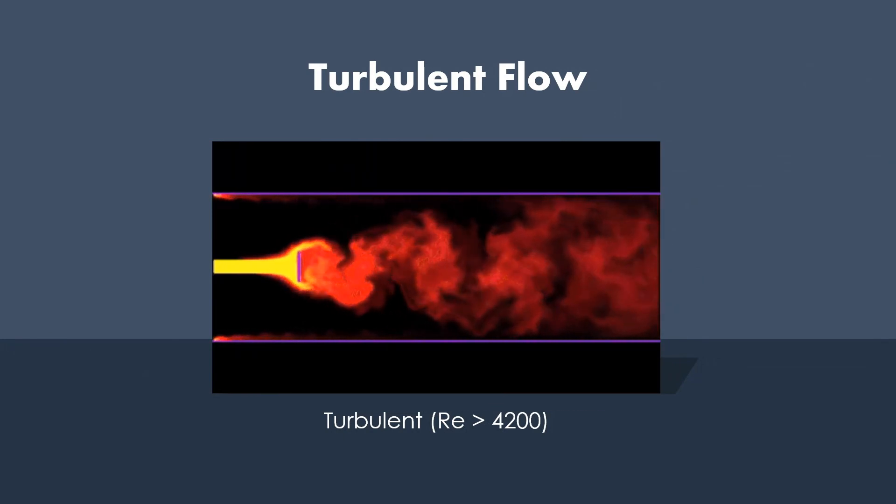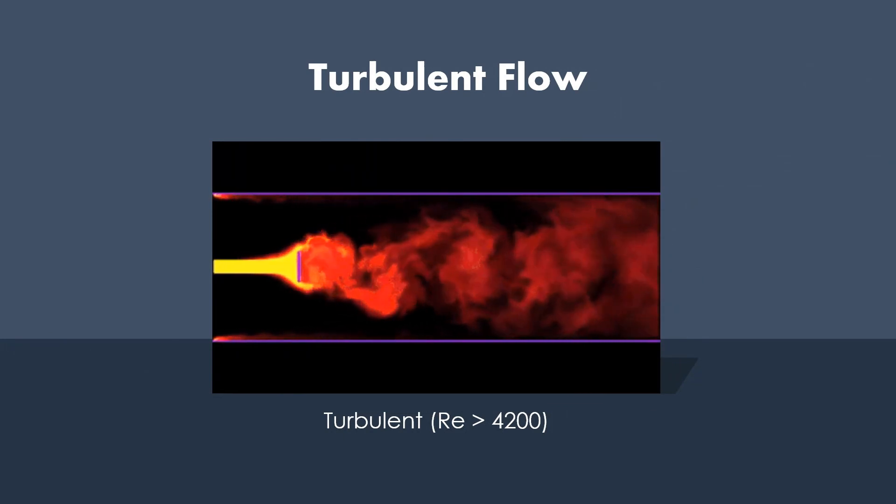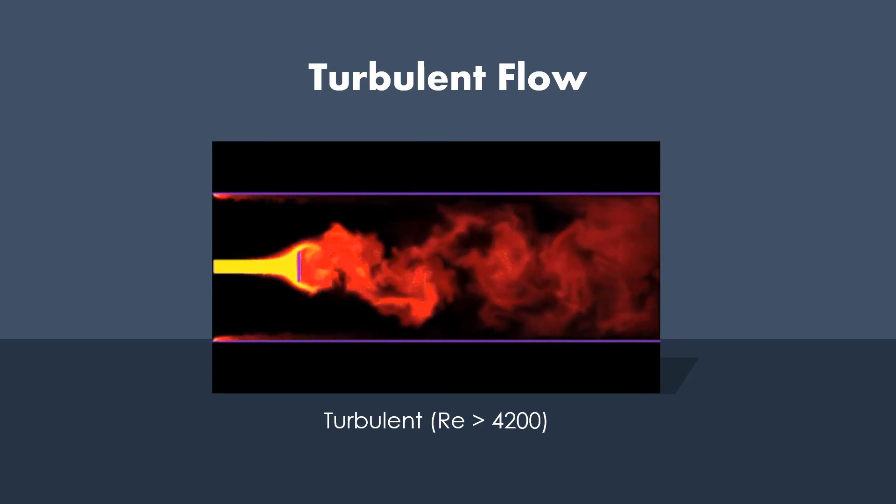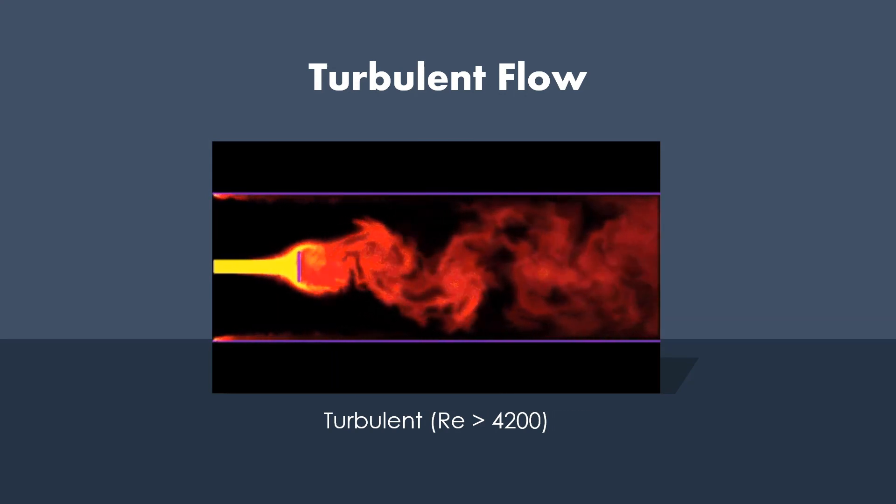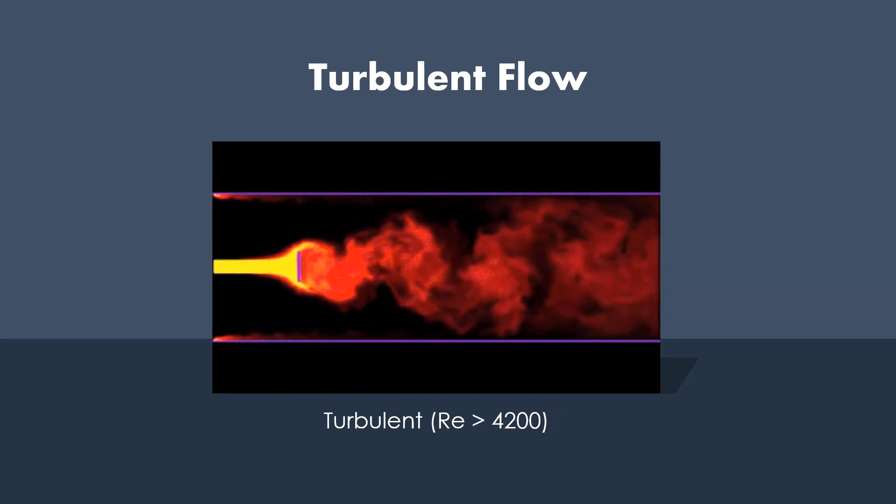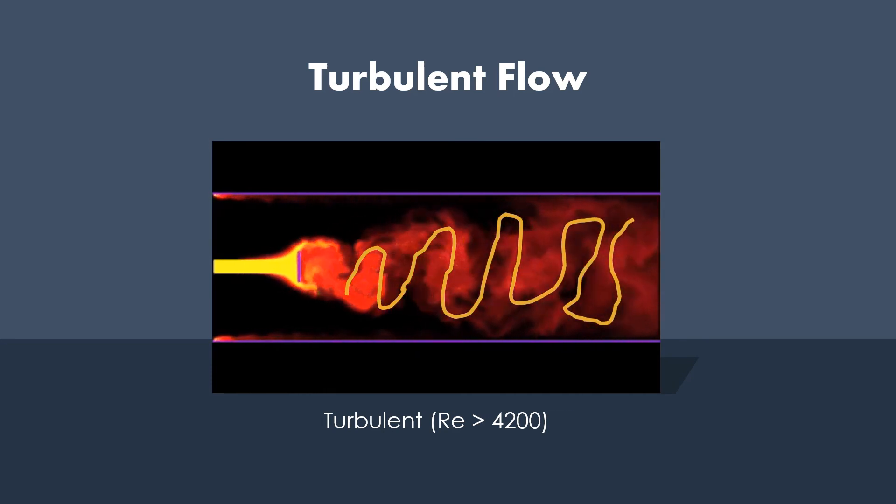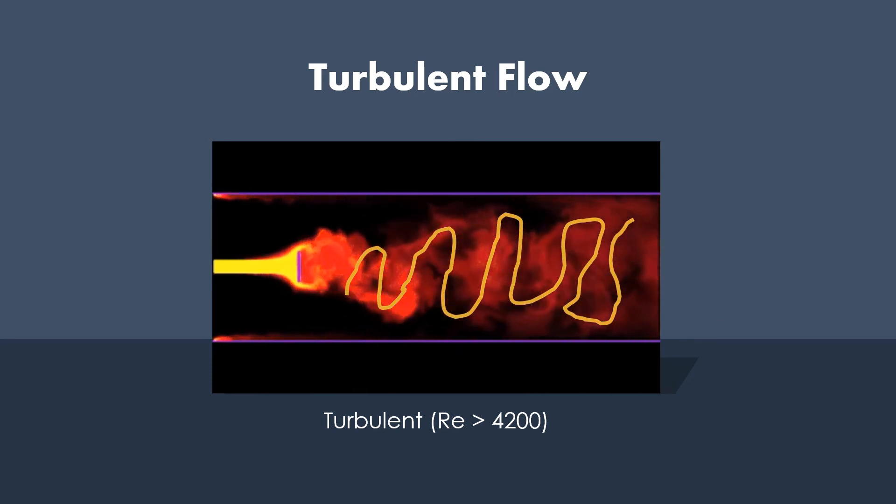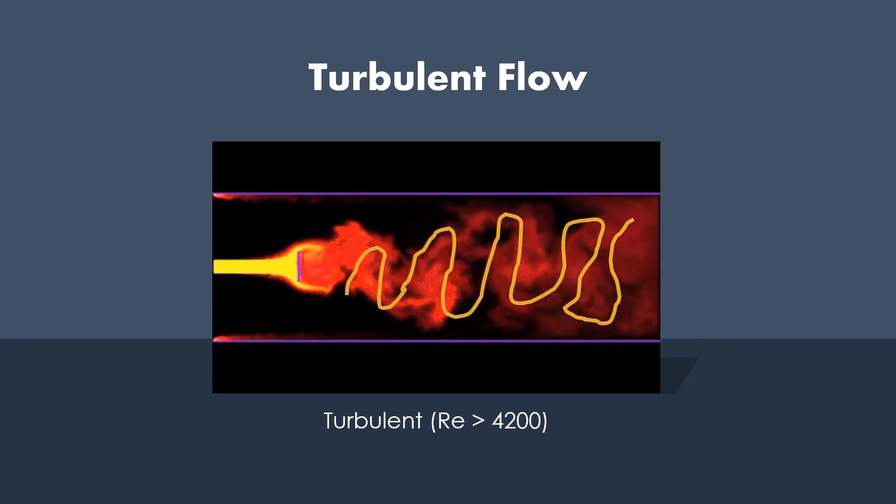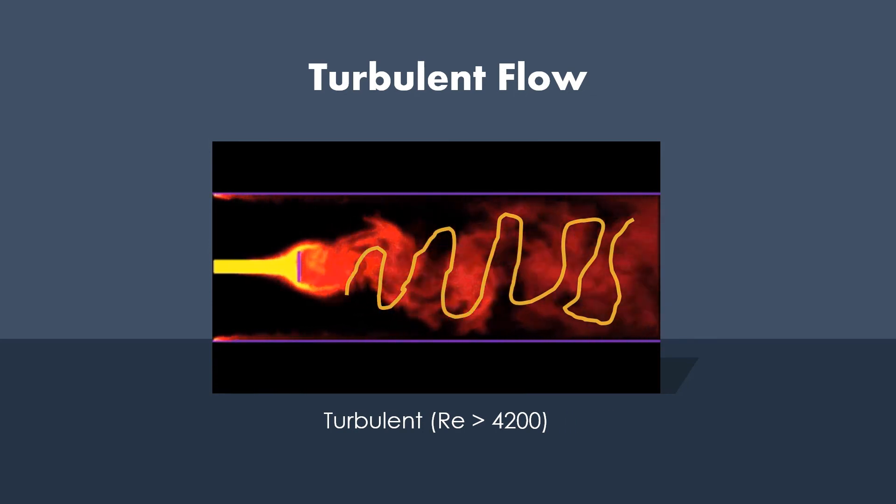In contrast, when you have turbulent flow indicated by Reynolds number greater than 4200, now you have the particles of the fluid moving freely, creating some chaotic movements that causes the turbulence of the flow.